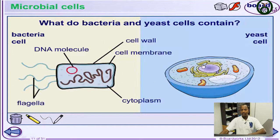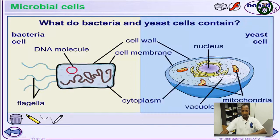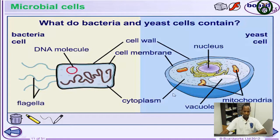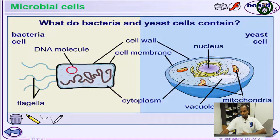Now let's take a look at the yeast cell and see what it has in common with the bacterial cell and what it has that the bacterial cell does not. The yeast cell has a cell wall for protection and rigidity, a cell membrane to control entry and exit, cytoplasm for metabolic reactions, a vacuole containing water and nutrients for growth, and mitochondria as the site for energy release.